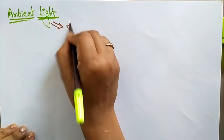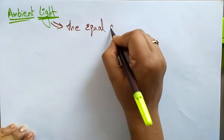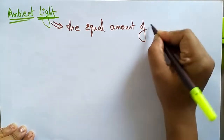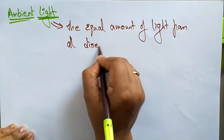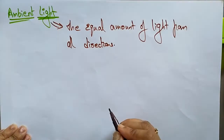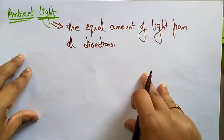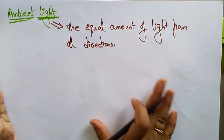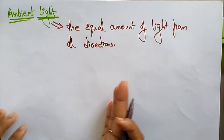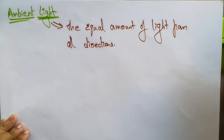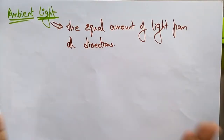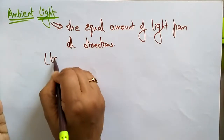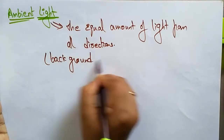In simple words, ambient light is an equal amount of light from all directions. Here, recording this video, I am getting an equal amount of light from all directions, which is why you are able to see the picture. We simply call it the background light — ambient light is the background light.